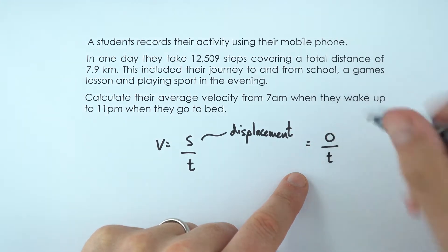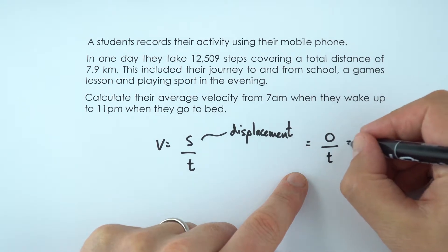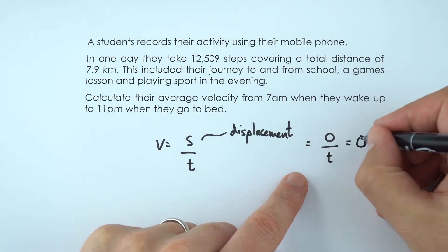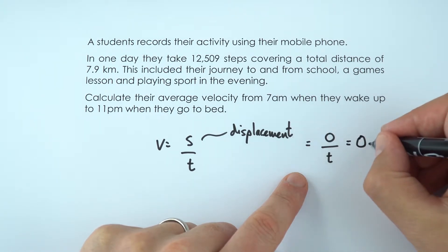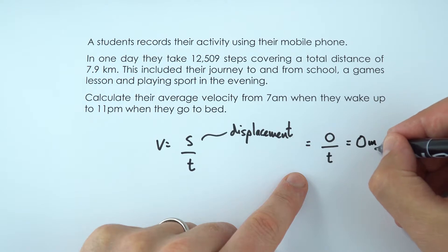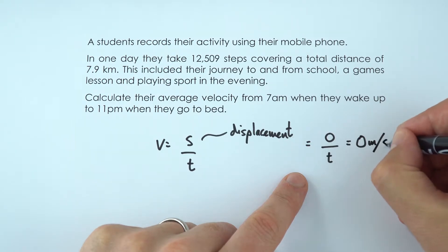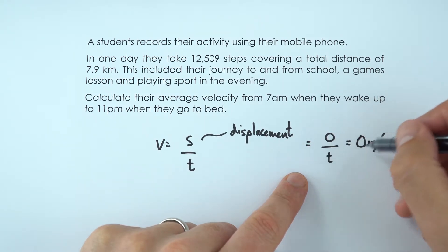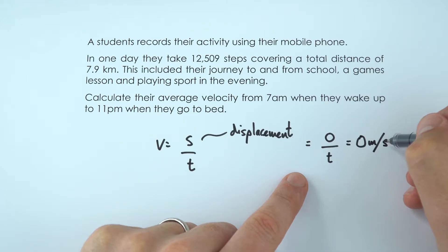If you've got zero divided by anything, the answer is still going to be equal to zero. So because this person started and ended up at the same point, their average velocity during the day is zero metres per second.